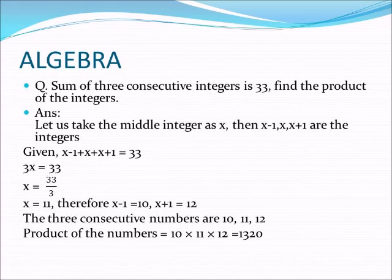Consider these are the integers. The sum of these three consecutive integers is 33, so we write: x minus 1 plus x plus x plus 1 equals 33. From the question we have formed the algebraic equation: (x − 1) + x + (x + 1) = 33.